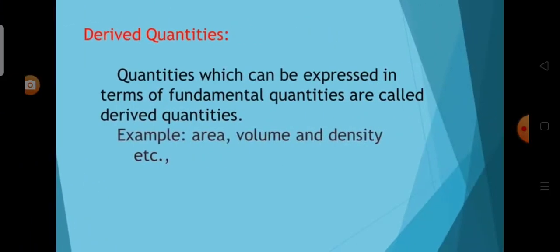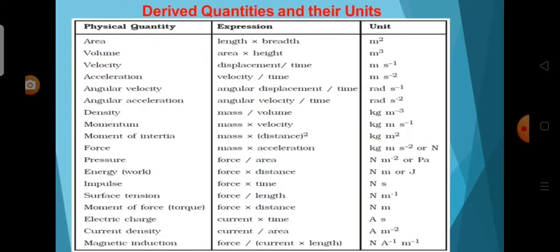The next one is the derived quantities. Quantities which can be expressed in terms of fundamental quantities are called derived quantities. Area, volume, velocity, acceleration, angular velocity, angular acceleration, density, momentum, moment of inertia, force, pressure, energy, impulse, surface tension, moment of force, electric charge, current density, and magnetic induction are examples for derived quantities.